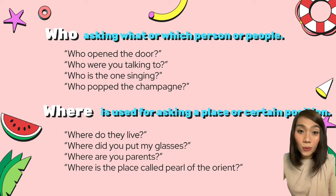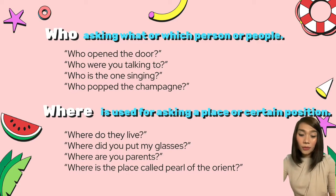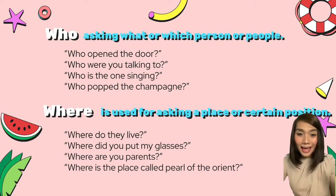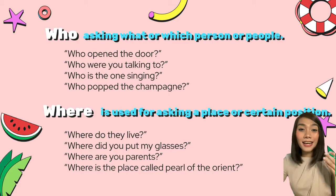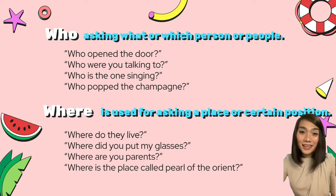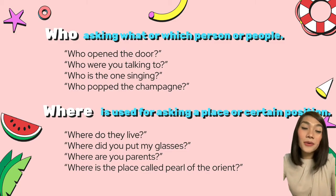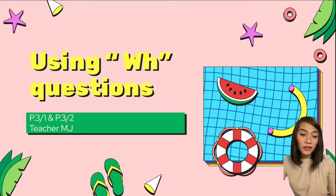Last would be WHERE. WHERE is used for asking a place or a certain position. We use WHERE if we are asking about a place and a certain position. For example: 'Where do you live?' — asking about a certain place. 'Where did you put my glasses?' — asking about a certain position or place where you put the glasses. 'Where are your parents?' — asking about the location where your parents are. 'Where is the place called Pearl of the Orient?' — asking about where the Pearl of the Orient is located. Did you understand?